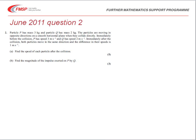The June 2011 question on momentum: particle P has mass 3 kilograms and Q has mass 2 kilograms — so both masses are known. The particles move in opposite directions on a smooth horizontal plane and collide. Immediately before the collision, P moves at 3 meters per second and Q at 2 meters per second. After the collision, both particles move in the same direction but their speeds differ by 1 meter per second. We're asked to find the speed of each particle after the collision, then calculate the magnitude of the impulse exerted by P on Q.